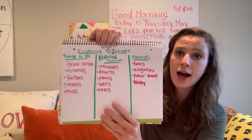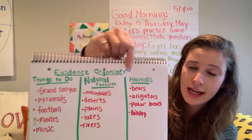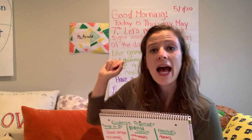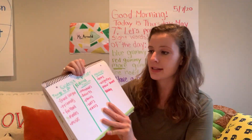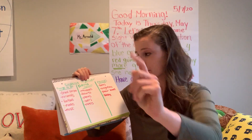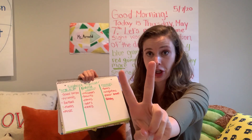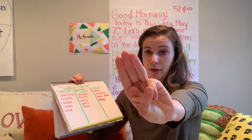At the top I wrote 'evidence organizer,' and then I have three categories or sections. I have things to do, I have natural features, and I have animals.